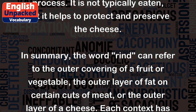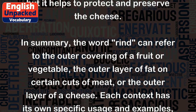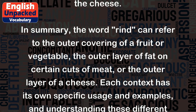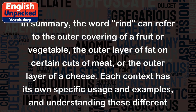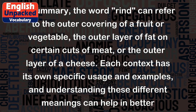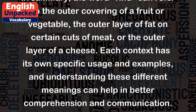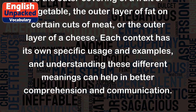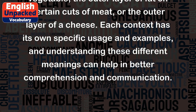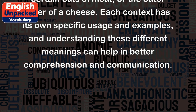In summary, the word rind can refer to the outer covering of a fruit or vegetable, the outer layer of fat on certain cuts of meat, or the outer layer of a cheese. Each context has its own specific usage and examples, and understanding these different meanings can help in better comprehension and communication.